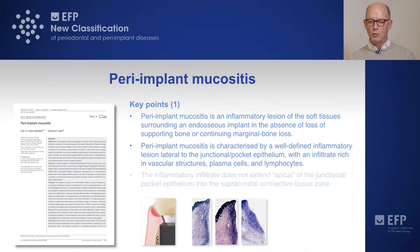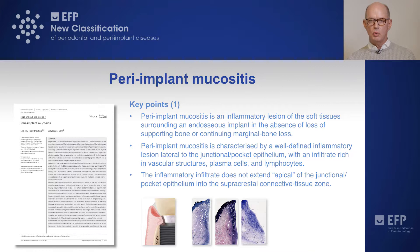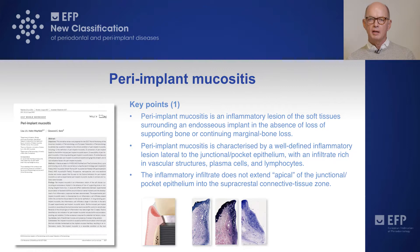Furthermore, the inflammatory infiltrate does not extend apical of the epithelial extension — that is, it does not extend apical of a pocket epithelium or into the supracrestal connective tissue zone. This is a very important observation, as this is the borderline between the mucositis condition and peri-implantitis.